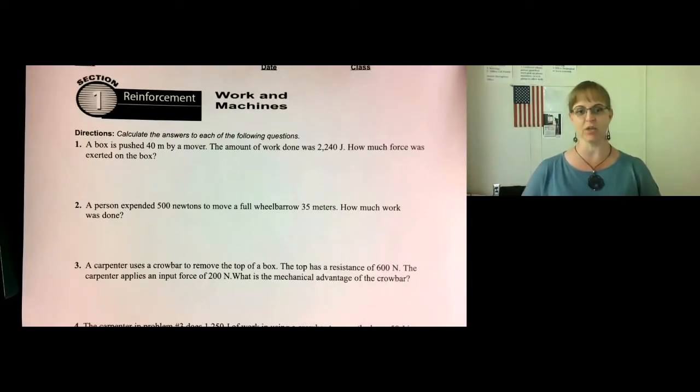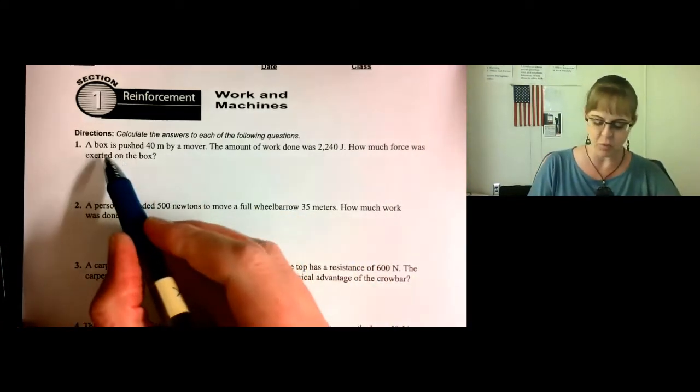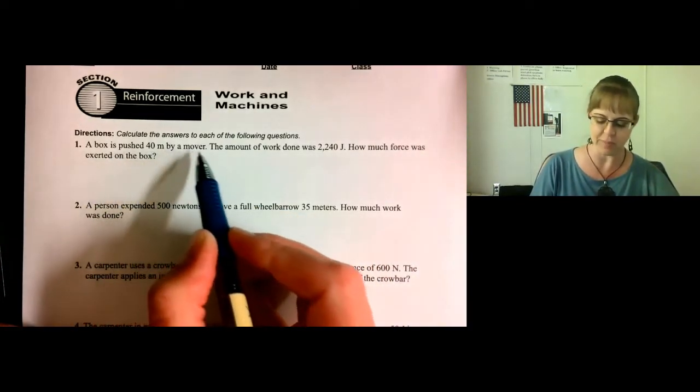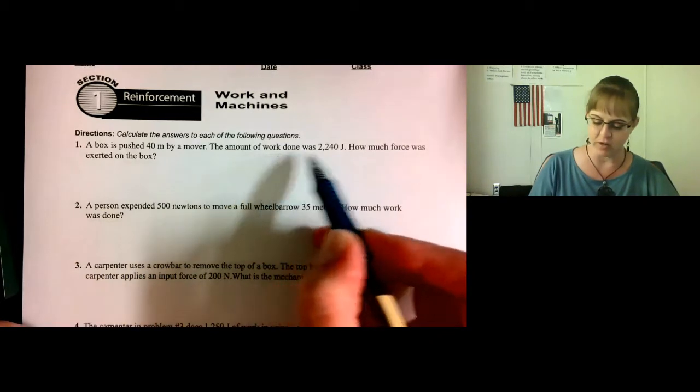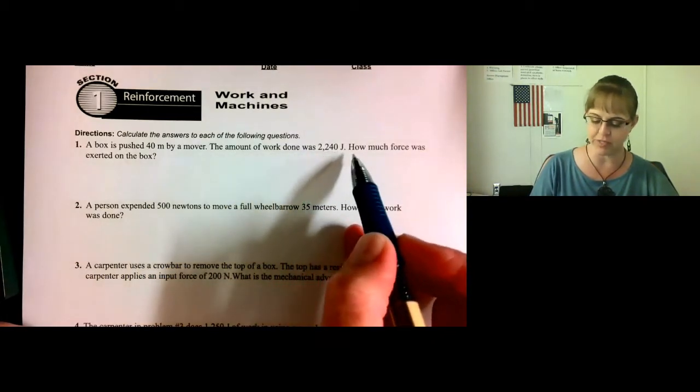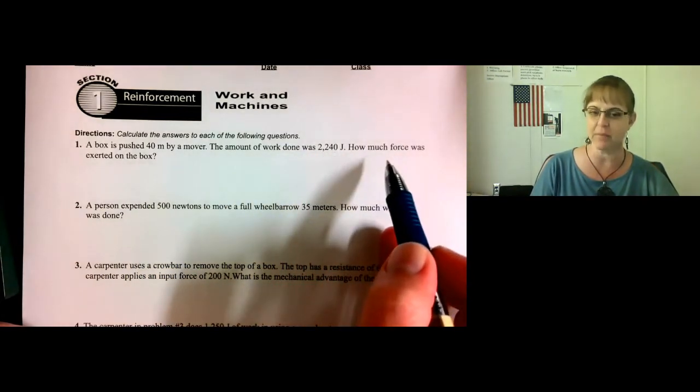Let's take a look at how to do this Work and Machines Reinforcement Worksheet. Number one. A box is pushed 40 meters by a mover. The amount of work done was 2,240 joules. How much force was exerted on the box?